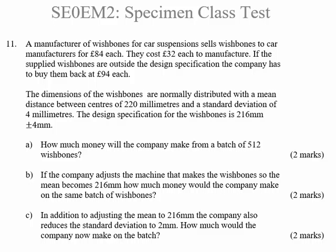A company manufactures wishbones for car suspensions and sells them to car makers. A wishbone is part of the front steering and suspension. They cost £32 each to manufacture and they sell them for £84, but if they're outside the design spec they have to buy them back at £94.